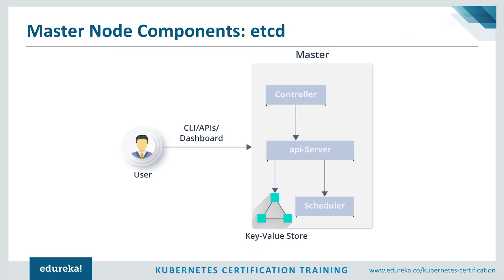The last master component is etcd. etcd is a distributed key-value store used to store the cluster state. It can either be part of the Kubernetes master or configured externally. Those were the various components of the master node.